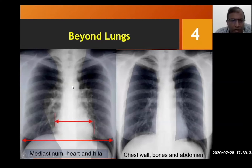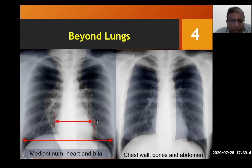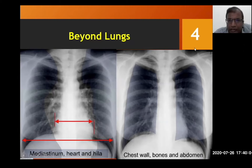After the lung fields, we look at the mediastinum, the hilar shadows, and then the configuration of the cardiac shadow. Finally, we look at the cardiothoracic ratio — the ratio of the maximum dimension of the cardiac shadow to the maximum inner thoracic diameter. We should never forget to examine the periphery of the chest film, including the chest wall, bones, and the upper part of the abdomen.